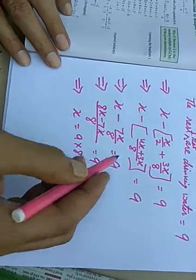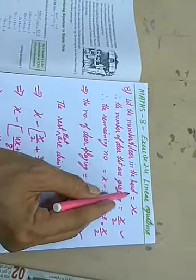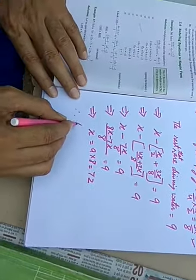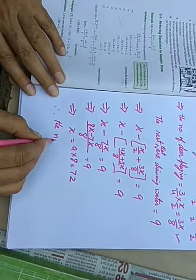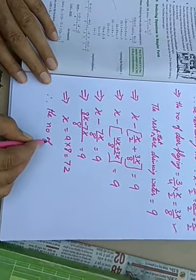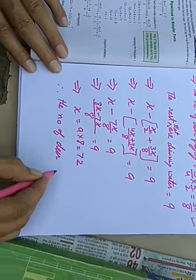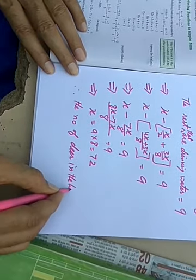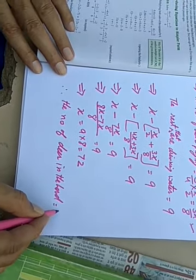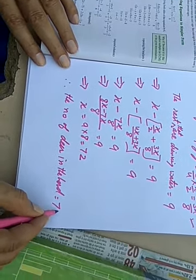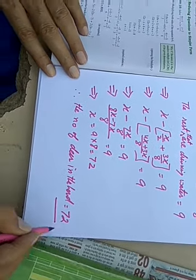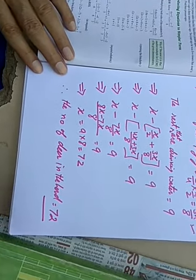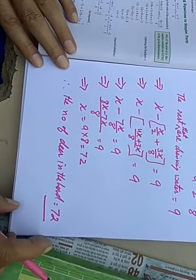What is X? The number of deer in the herd. Therefore, the number of deer in the herd is equal to seventy-two. I hope you have understood it well. In case of any doubts, you may always come to me. Thanks for joining.